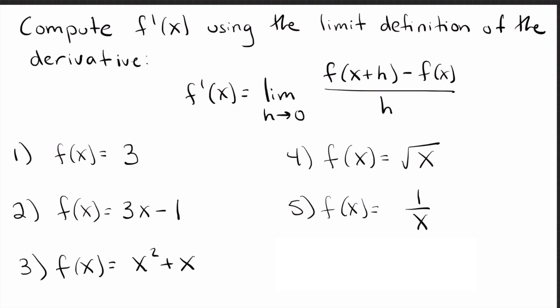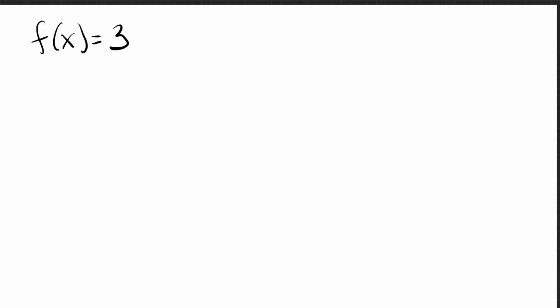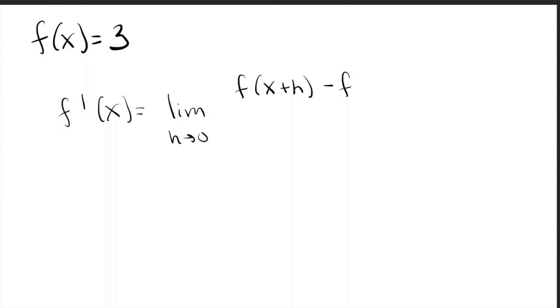Let's get started with number one. The first one is just taking the derivative of a constant, of a number. There's nothing special about three — this works exactly the same for zero, negative 12, pi, or whatever. Remember that the derivative of f is given by the limit as h goes to zero. This is what we refer to as the limit definition of the derivative. For this one, we'll really focus on understanding what each part is, and then in later problems we'll just assume you understand that.